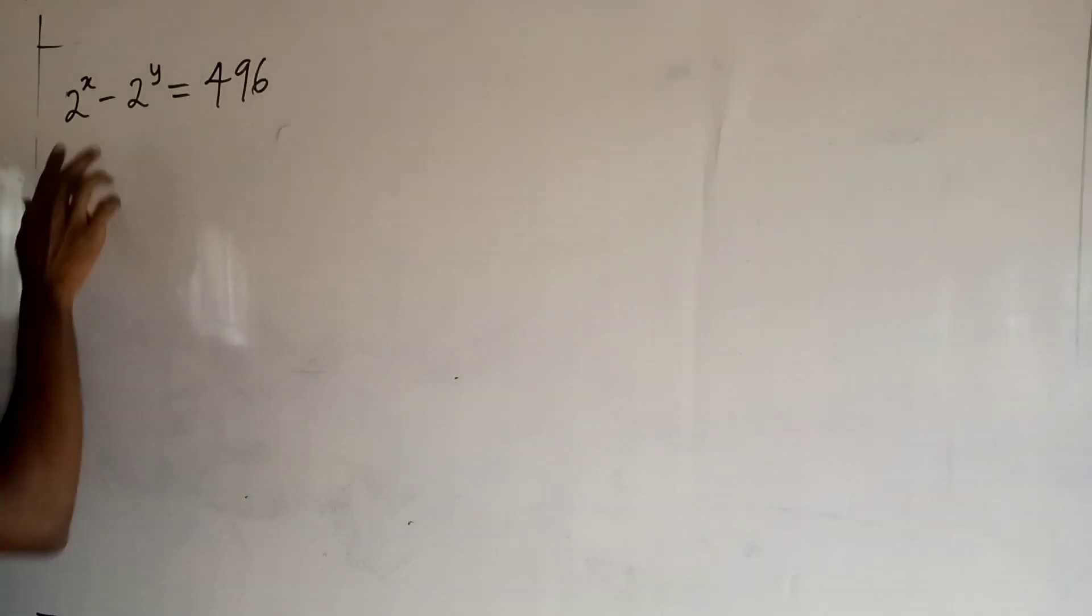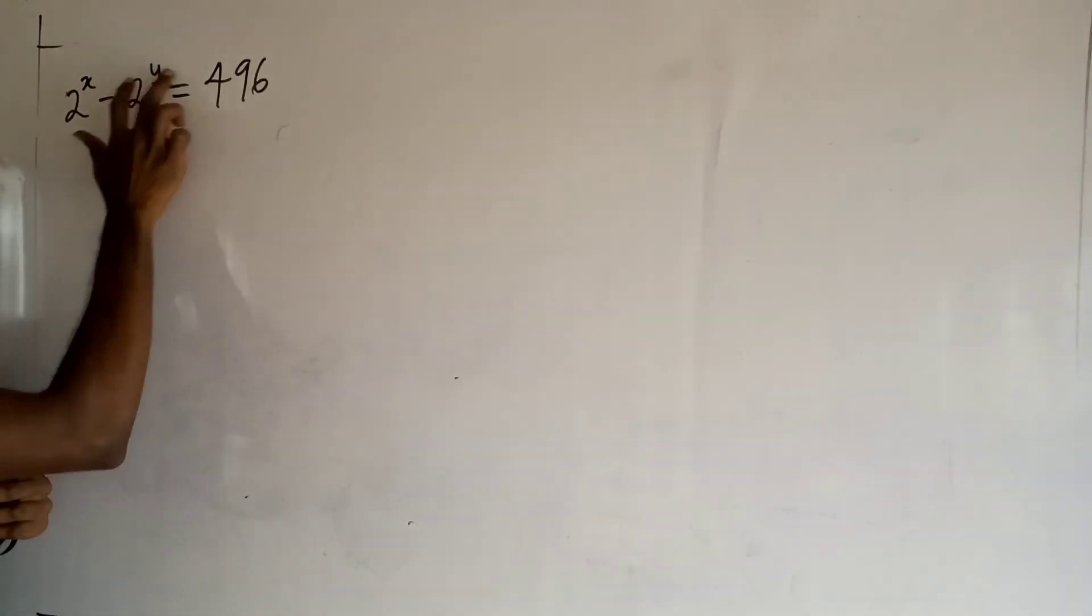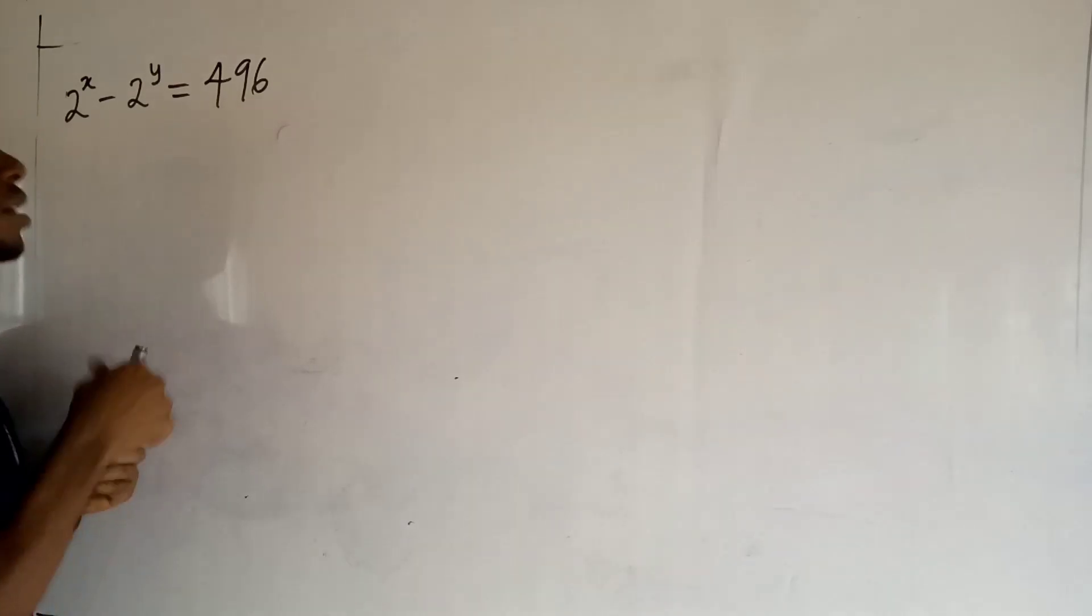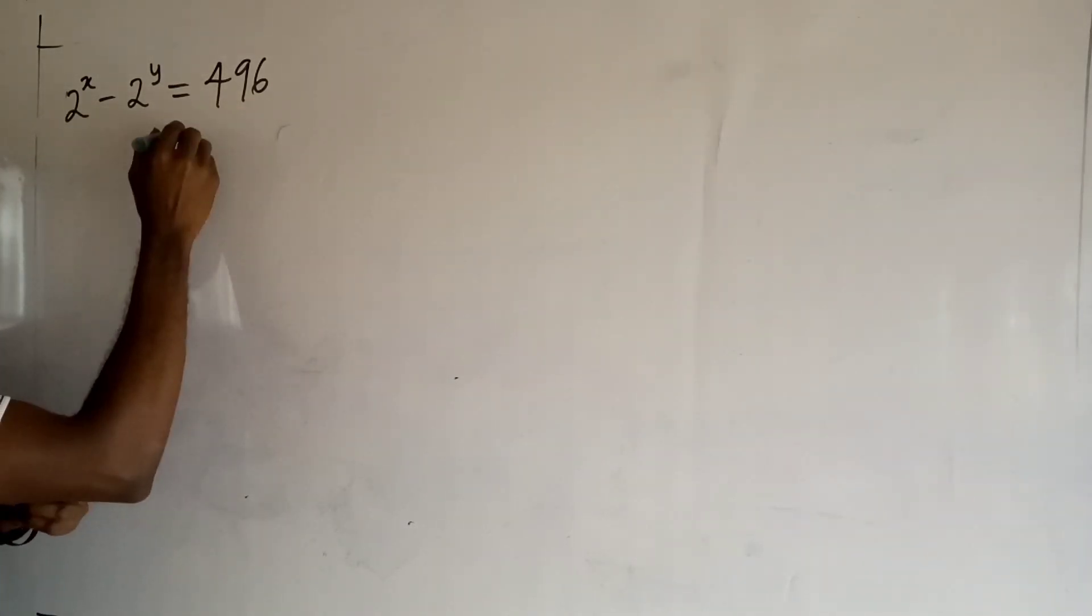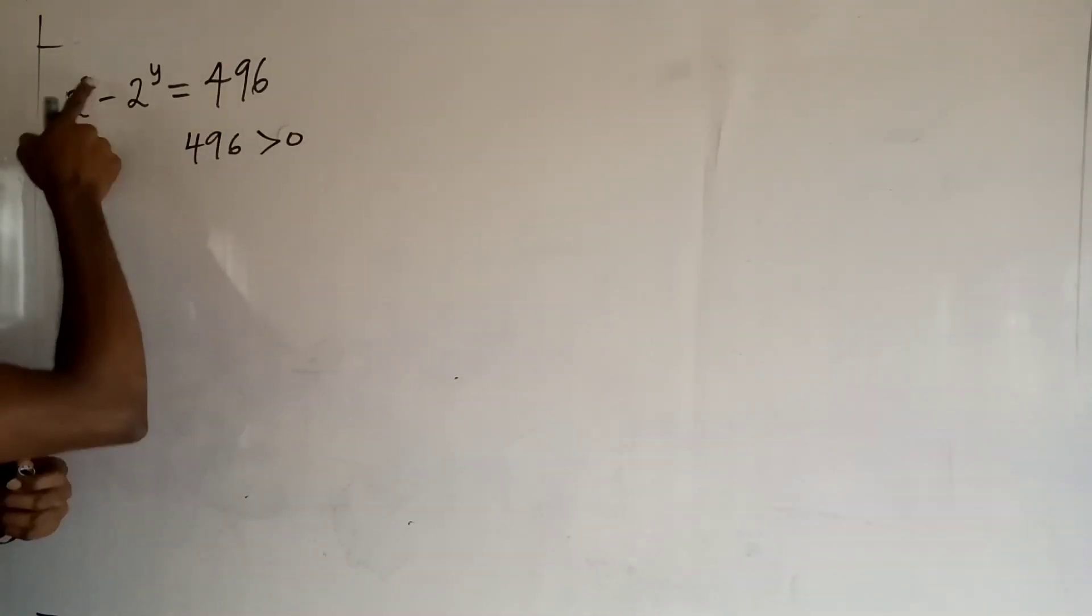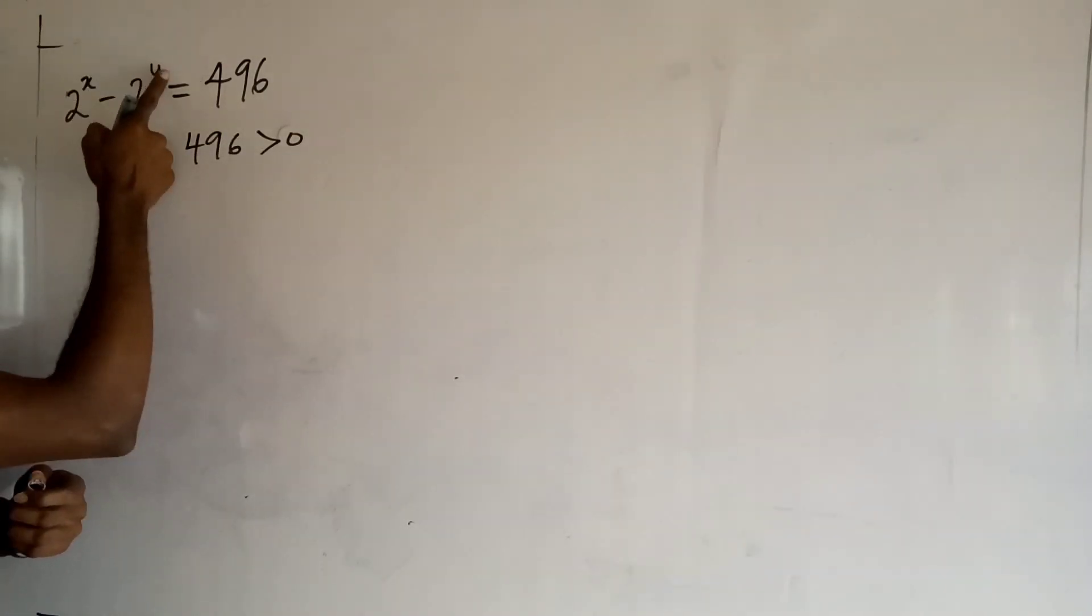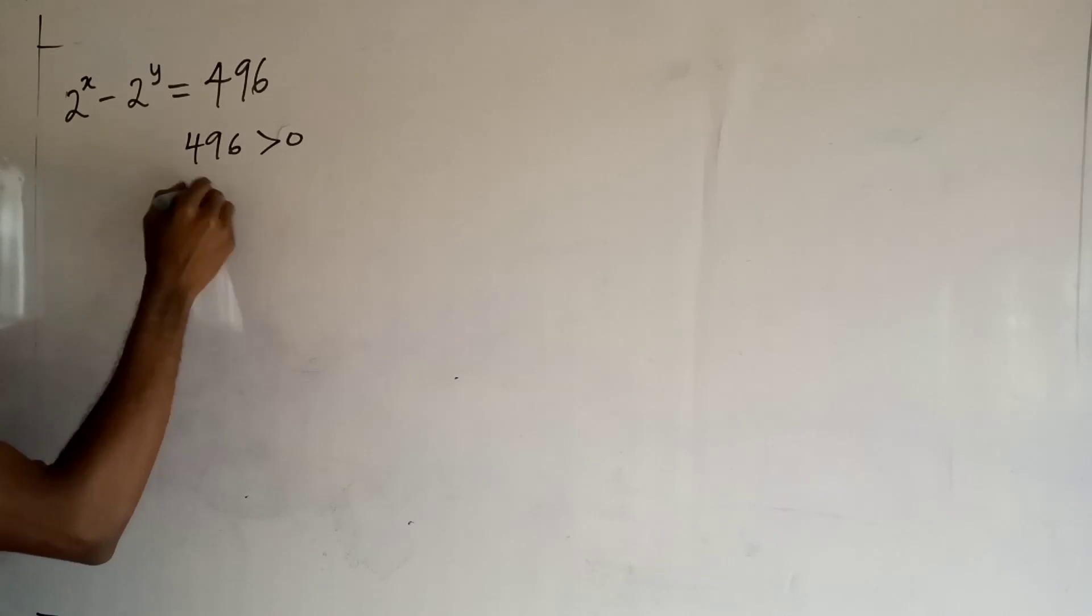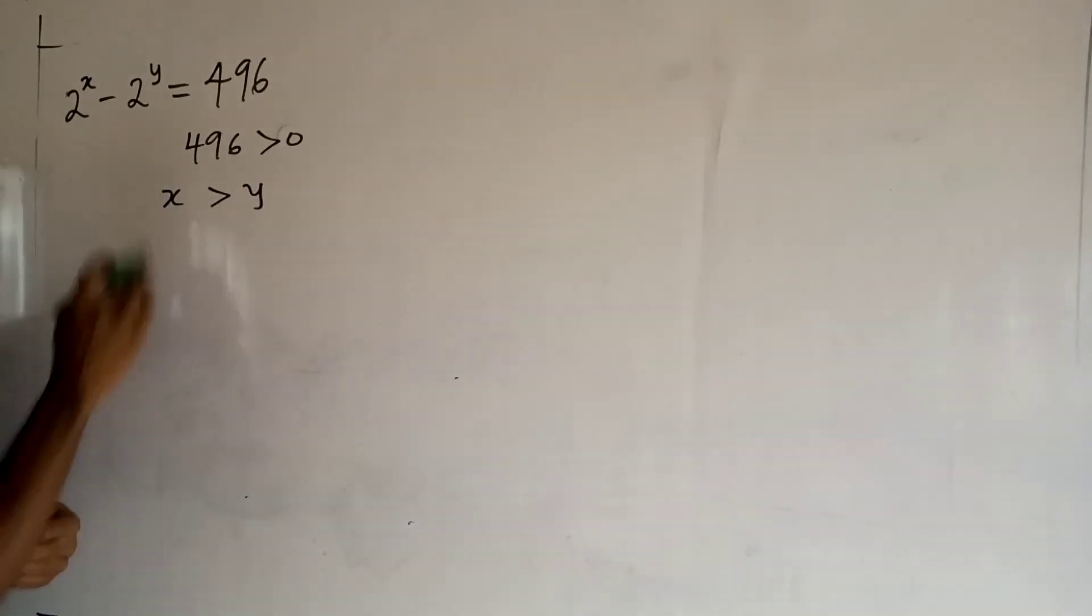What it means is that for 2 to the power x minus 2 to the power y to give us a positive number, for this difference to give us a number that is positive, it means that this guy must be greater than this guy.